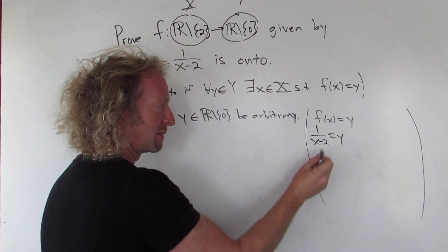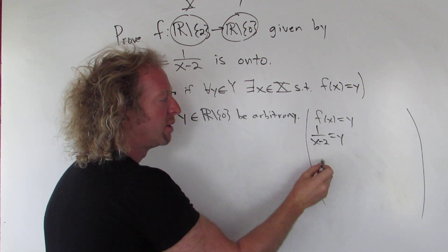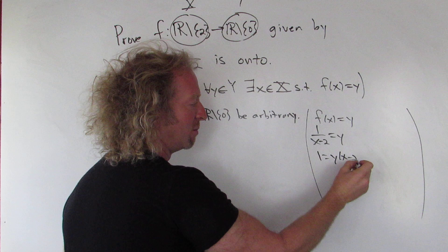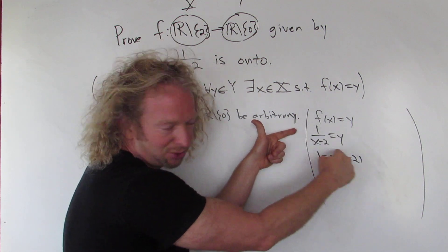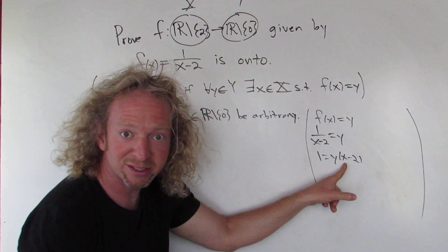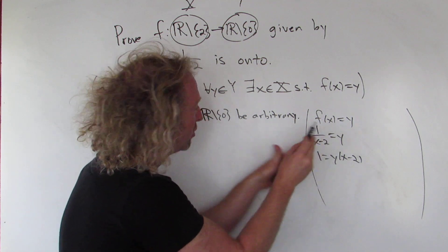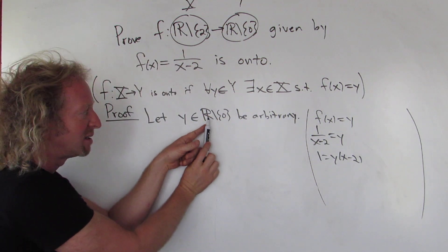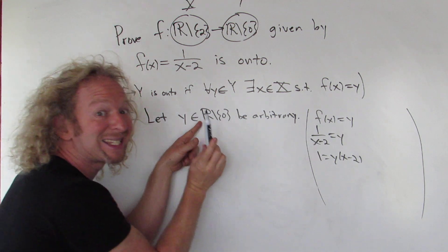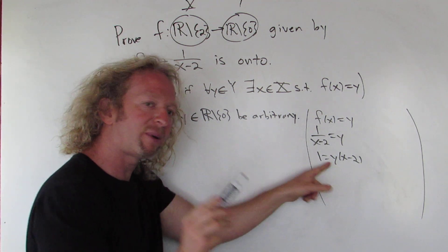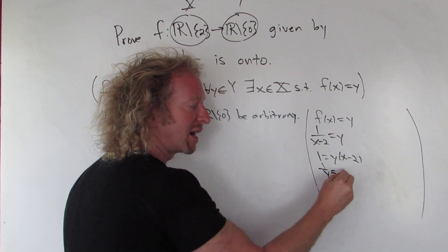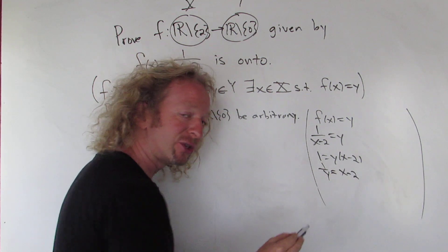We have 1 over x minus 2 equals y. Multiply both sides by x minus 2 to get 1 equals y times (x minus 2). Now we're looking for x, so we can divide by y. Note that y is not 0 because it's in the set of real numbers minus 0 — all real numbers except 0 — so we can divide by y. That gives us 1 over y equals x minus 2.